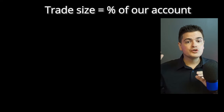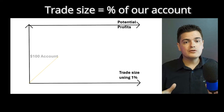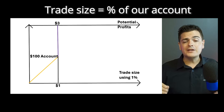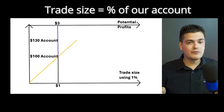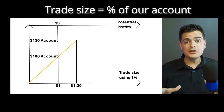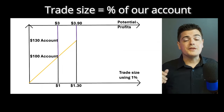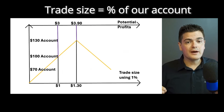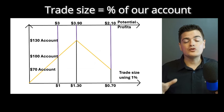Why use a percentage of your account? As our account grows, so does the size of our trades and our potential profits. For example, with a $100 account risking 1% per trade, a 3-to-1 risk-to-reward ratio means risking $1 to potentially make $3. As your account grows to $130, your risk becomes $1.30 and your potential profits become $3.90. Conversely, if your account drops to $70, your risk decreases to $0.70, helping protect your account during losses.